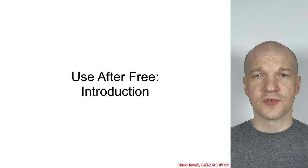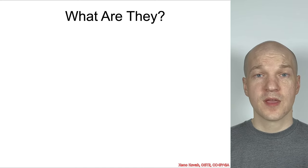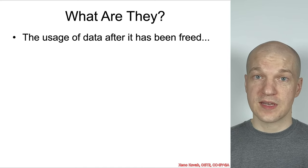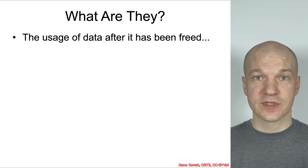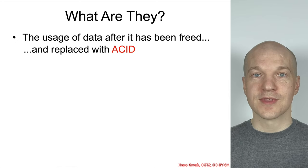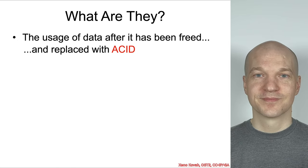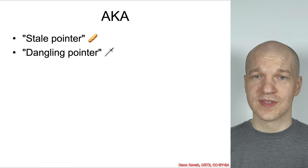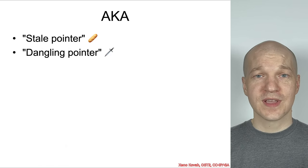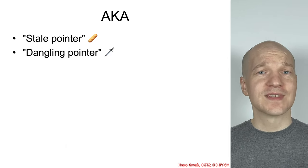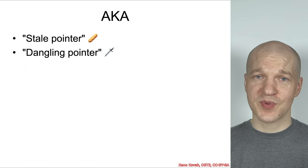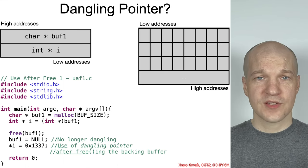So what are use-after-free vulnerabilities? It's when you use data after it's been freed and replaced with attacker-controlled data. It's also known by the name stale pointers or dangling pointers, and we're going to go with dangling pointers in this class because it provides so much better analogies.